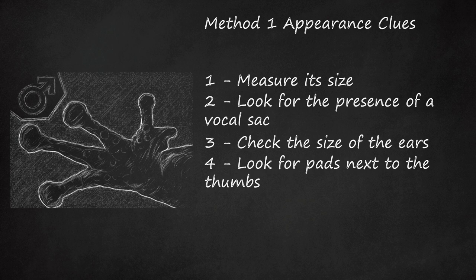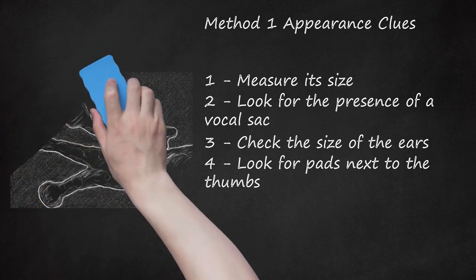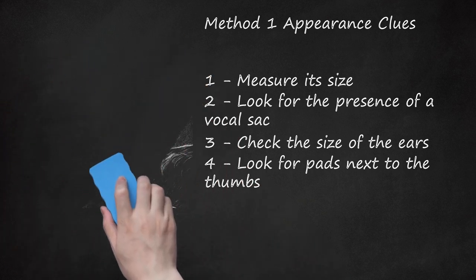If the thumb seems to be larger and thicker than the other digits, especially at its base, the frog is probably a male. This feature may be difficult to see except in the breeding season, when it enlarges in time for mating.